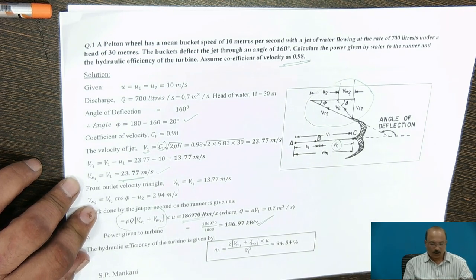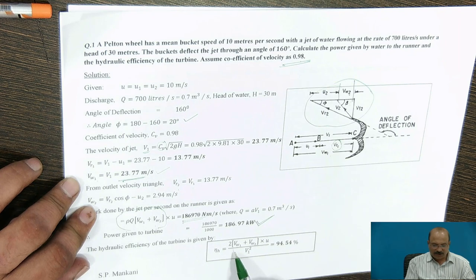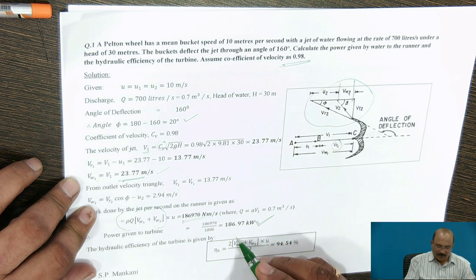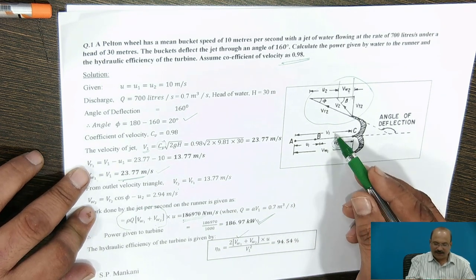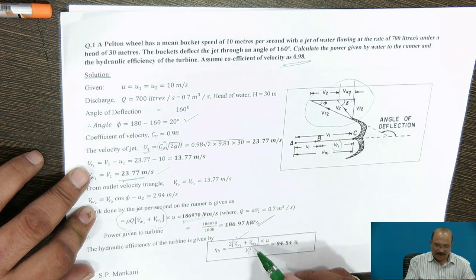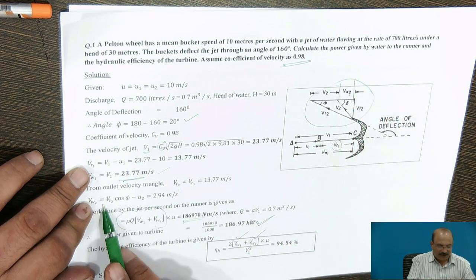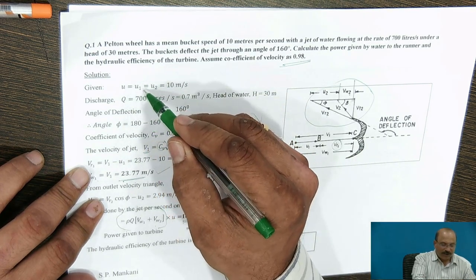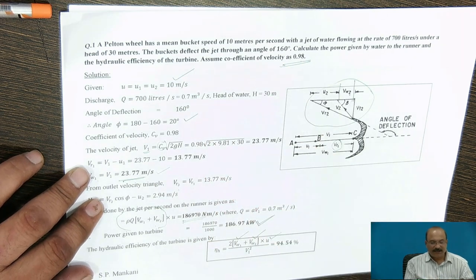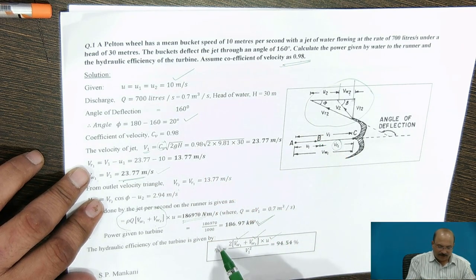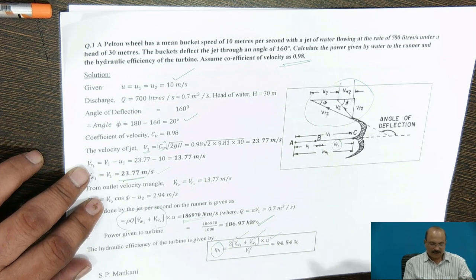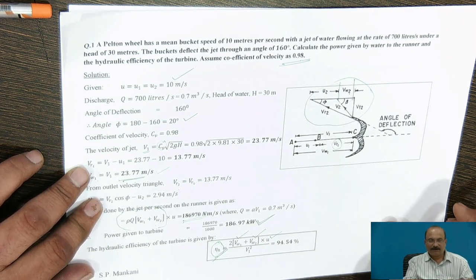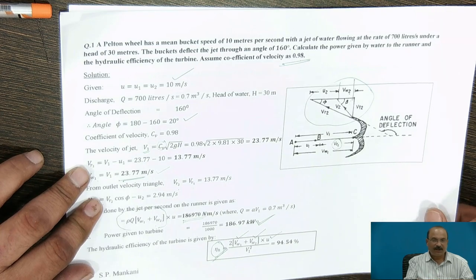The hydraulic efficiency of the turbine is given by eta_H equals 2 into (VW1 plus VW2) divided by V1 squared, multiplied by U. VW1 has been calculated, V1 equals VW1, VW2 has just been calculated, and U1 equals 10 meters per second as given in the problem. Based on these, we calculate the hydraulic efficiency, which completes this problem.